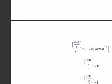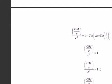So 1 minus the cos of arc sine c over c is 1. So the formula simplifies somewhat to GM over r over c squared equals 1. And then what we get is...